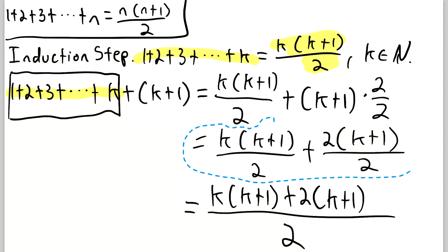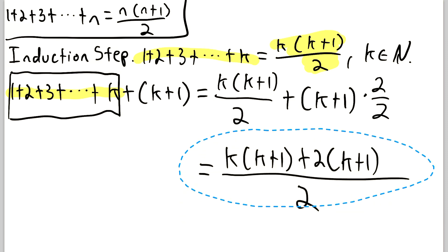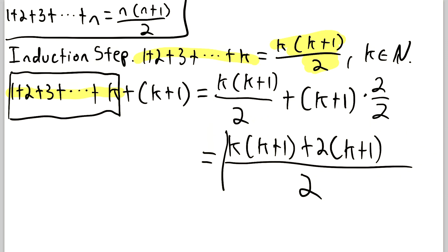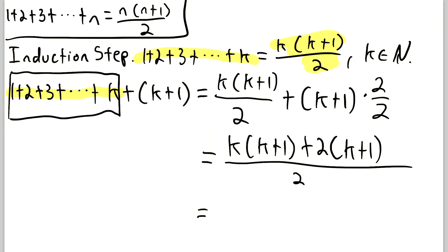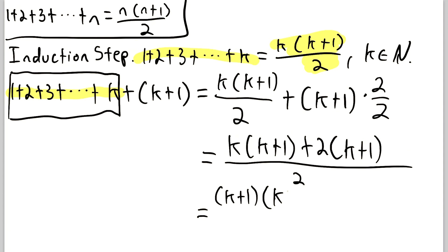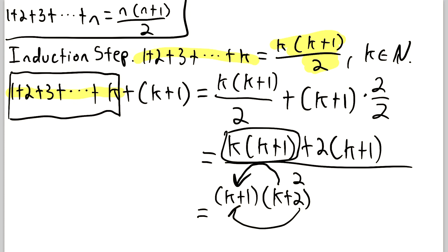Now that both fractions share the same denominator, we write the sum as one fraction: k times k+1 plus 2 times k+1, all divided by 2. Looking at the numerator, k(k+1) and 2(k+1) share a common factor of k+1, so we factor it out. Factoring out k+1, we get k+1 multiplied by k+2, all divided by 2. You can verify this by distributing back: k times k+1 plus 2 times k+1.